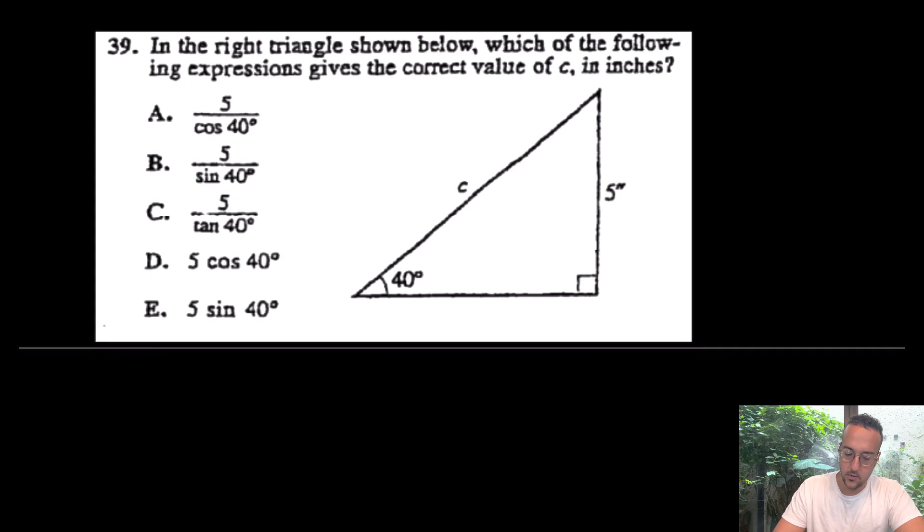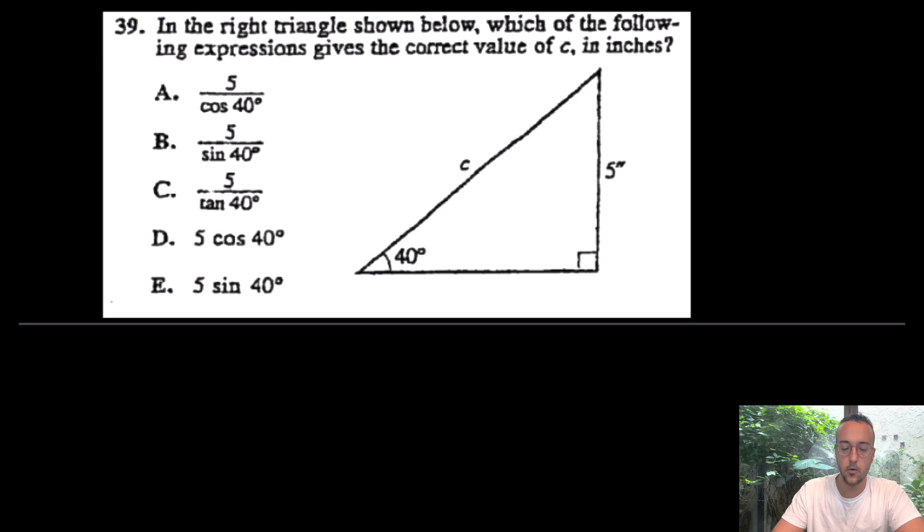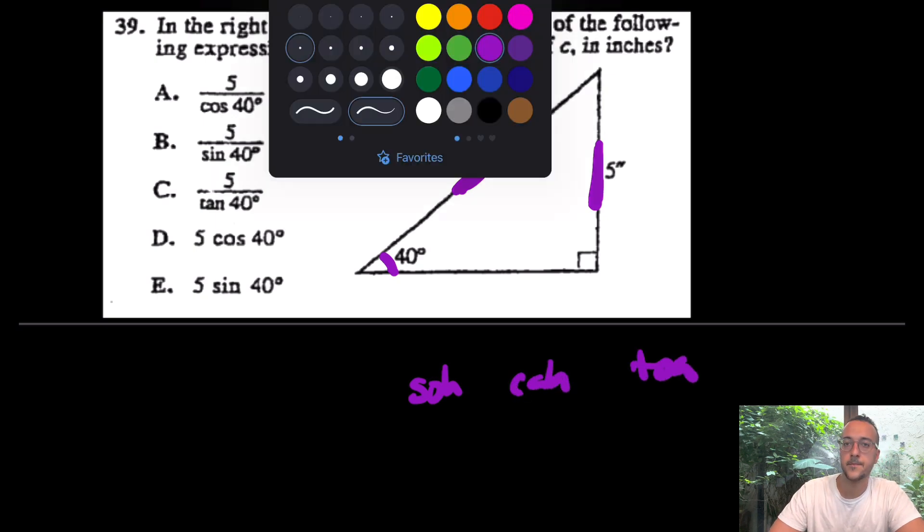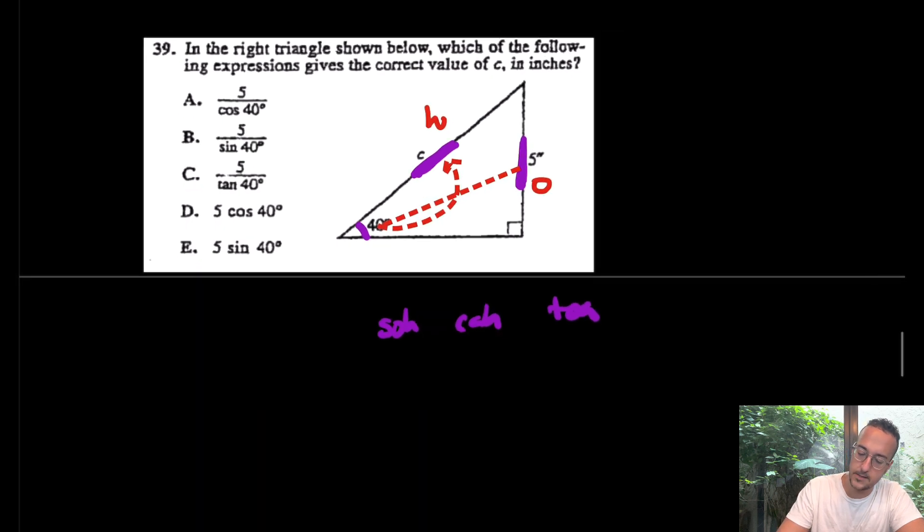And we have just one last question for right triangle trig. Come down here for 39. Try this question by yourself if you'd like, or again, just watch along. From this angle, which trig function would relate this side and this side? Would it be SOH, CAH, or TOA? Well, for me, I understand that this is opposite, and this is, of course, hypotenuse. Opposite and hypotenuse, which one do we like there? If this is opposite and this is hypotenuse, we like sine. Really, we have sine of 40 is equal to 5 over C.